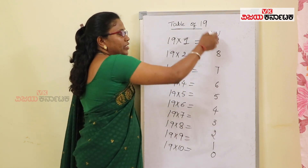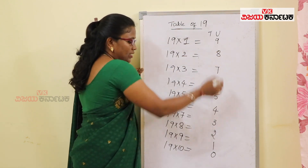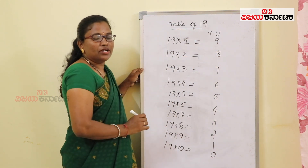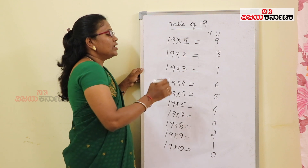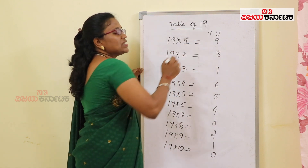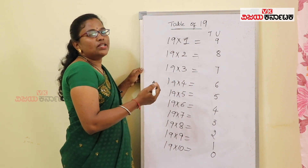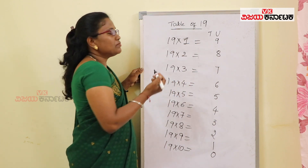0. So for the units place, 9 to 0 in reverse order. Now for the tens place, we write odd numbers.